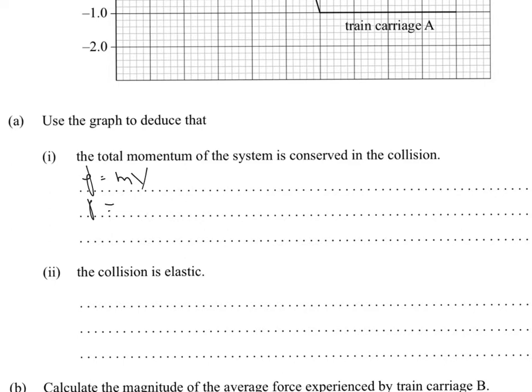Before the collision you have, this is of carriage A, you have a mass of 5000 kg and a velocity of 6 meters per second, which gives you a momentum of 3000 Ns.